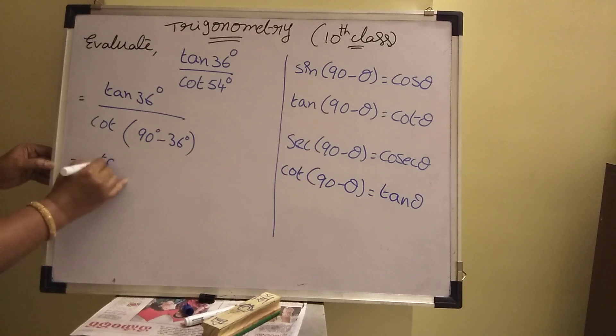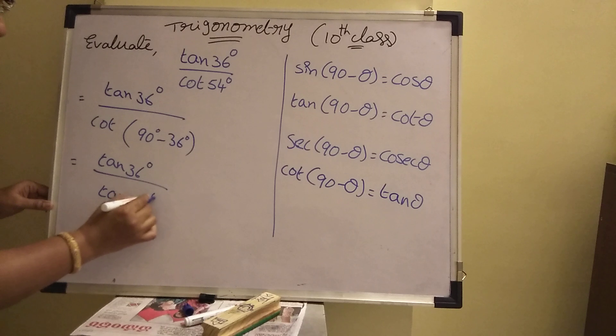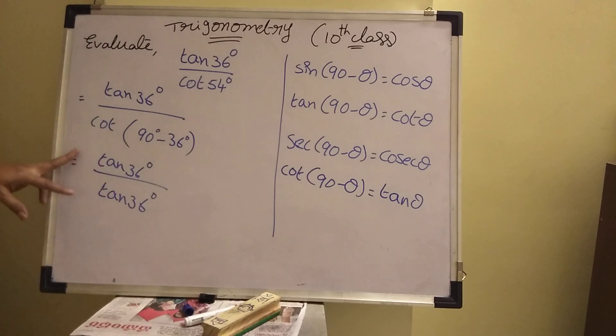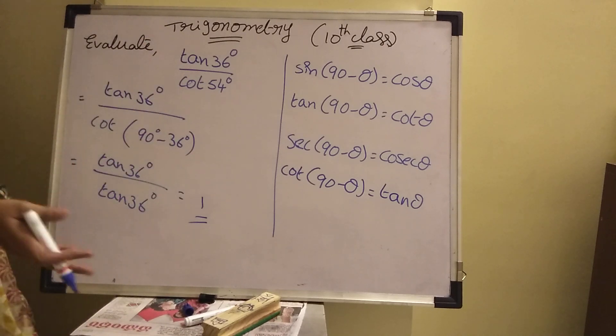Now, tan 36 degrees divided by here 90, then change the function. Tan 36. See, both are same. Answer, then one time cancel. One, it will be answer. Understand?